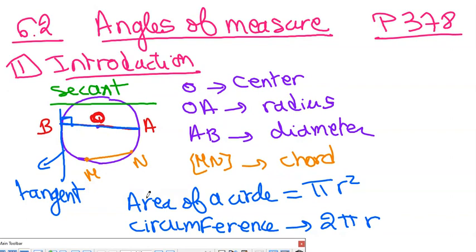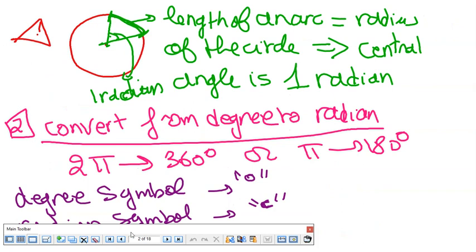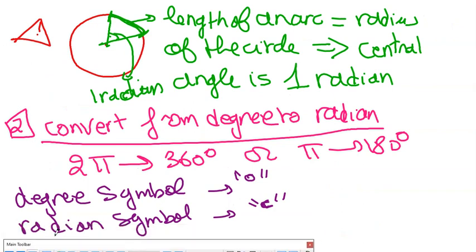We need to know the formula for the area of a circle — it's πr². And the circumference of a circle is 2πr. Now, a remark: if the length of the arc is equal to the length of the radius, then the central angle will be one radian. So one radian is the central angle of that sector.